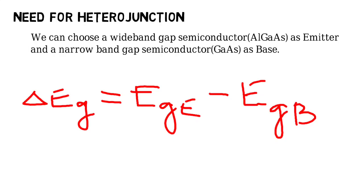Using AlGaAs as emitter, which is a wide band gap semiconductor compared to GaAs — a narrow band gap semiconductor — when you add such a junction, the AlGaAs/GaAs junction, the difference in energy band gap of emitter and base will be more, because you have increased the energy band gap of emitter with respect to the base. So ΔEg increases, and therefore the beta of the transistor also increases.